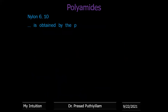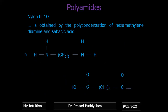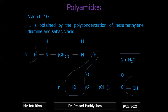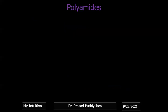Nylon 6-10 is also obtained by polycondensation of hexamethylenediamine and sebacic acid. The same condensation reaction applies, but the second monomer — sebacic acid — contains 10 carbon atoms. The corresponding polymer is represented with –(CH2)6–NH– and the second monomer having 10 carbons — therefore it is nylon 6-10.